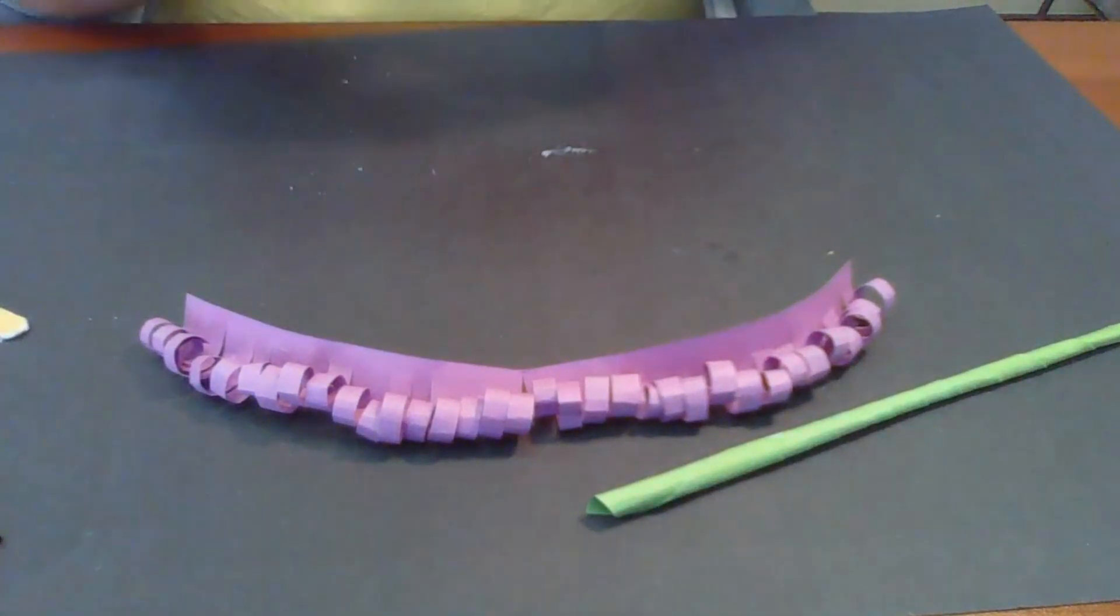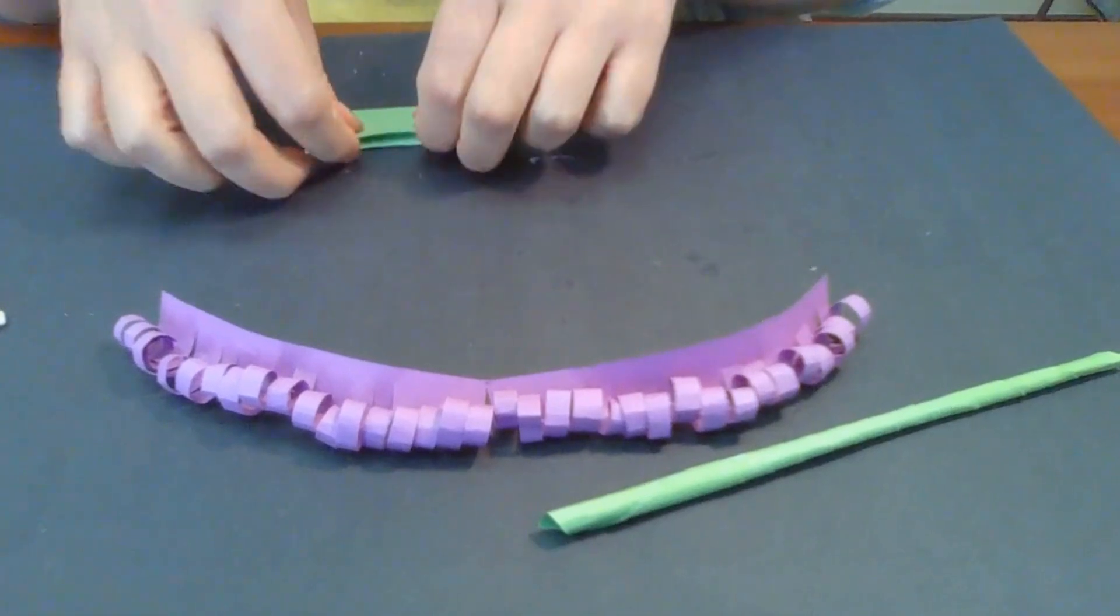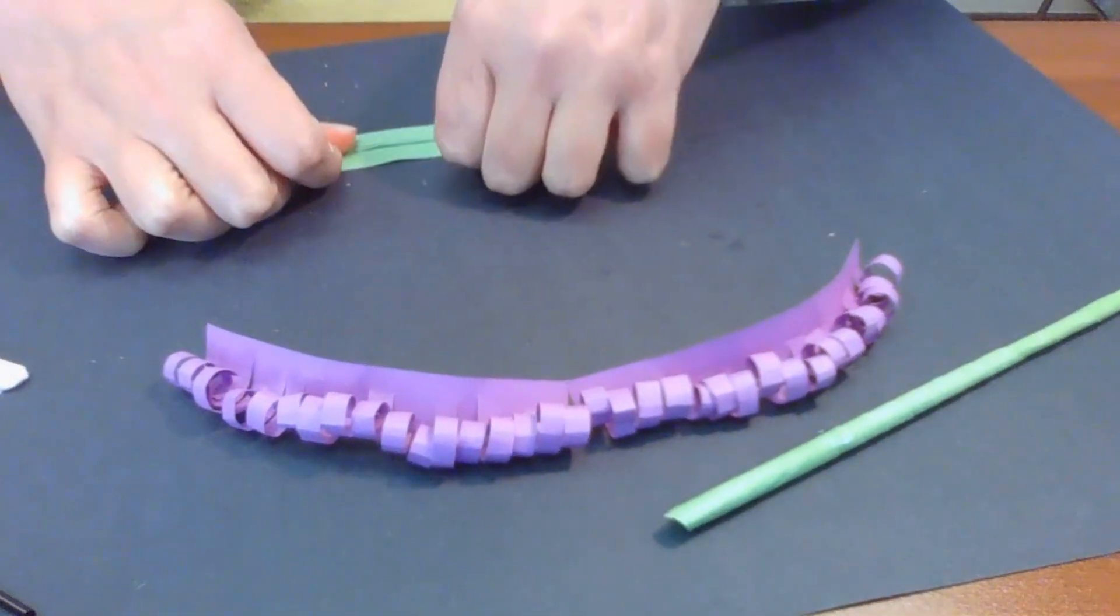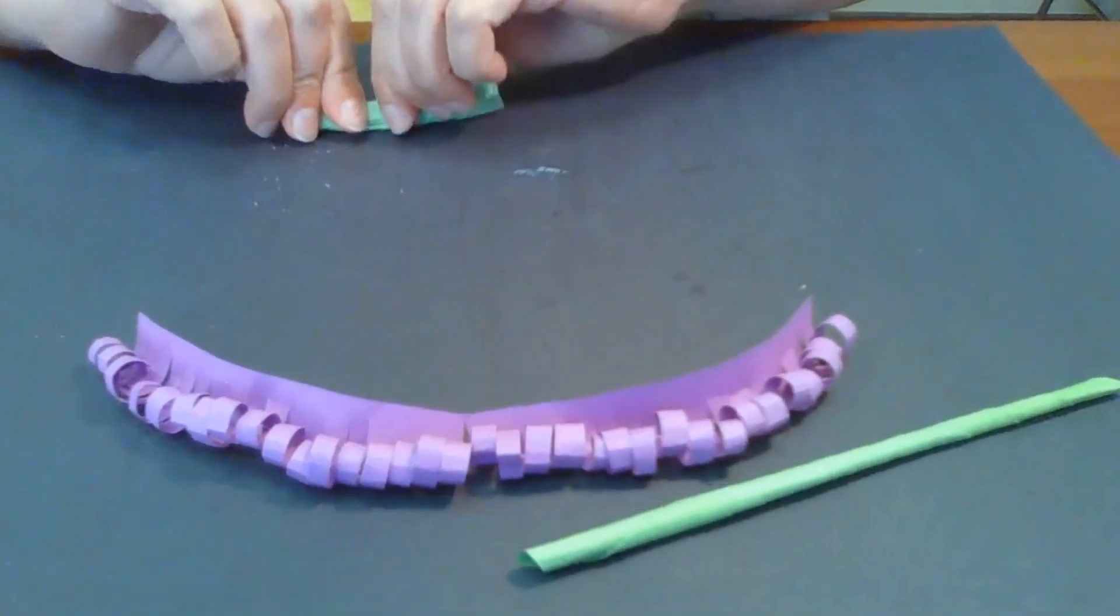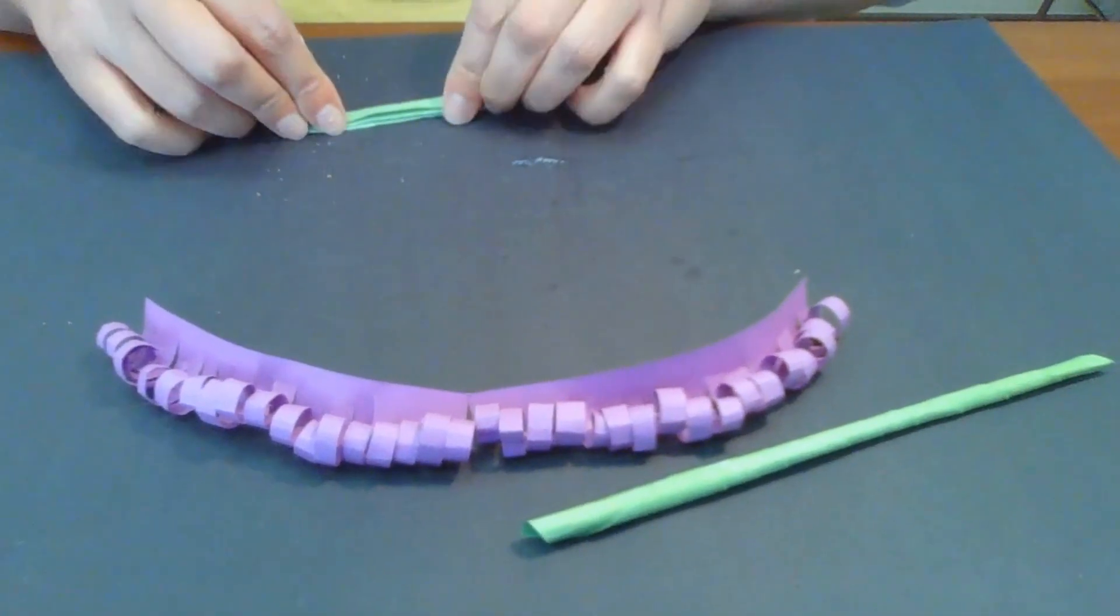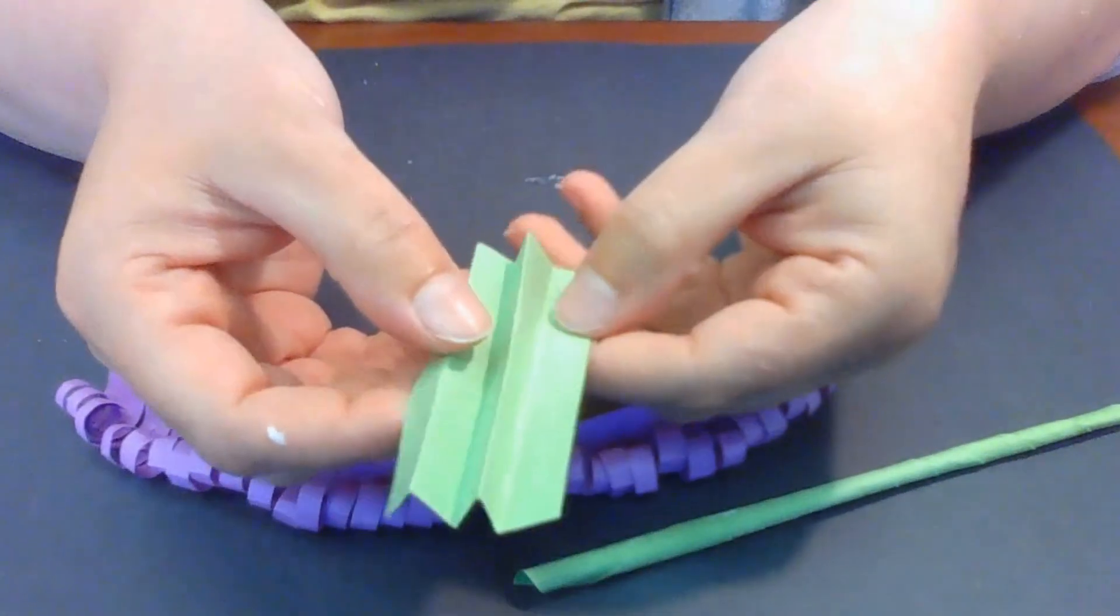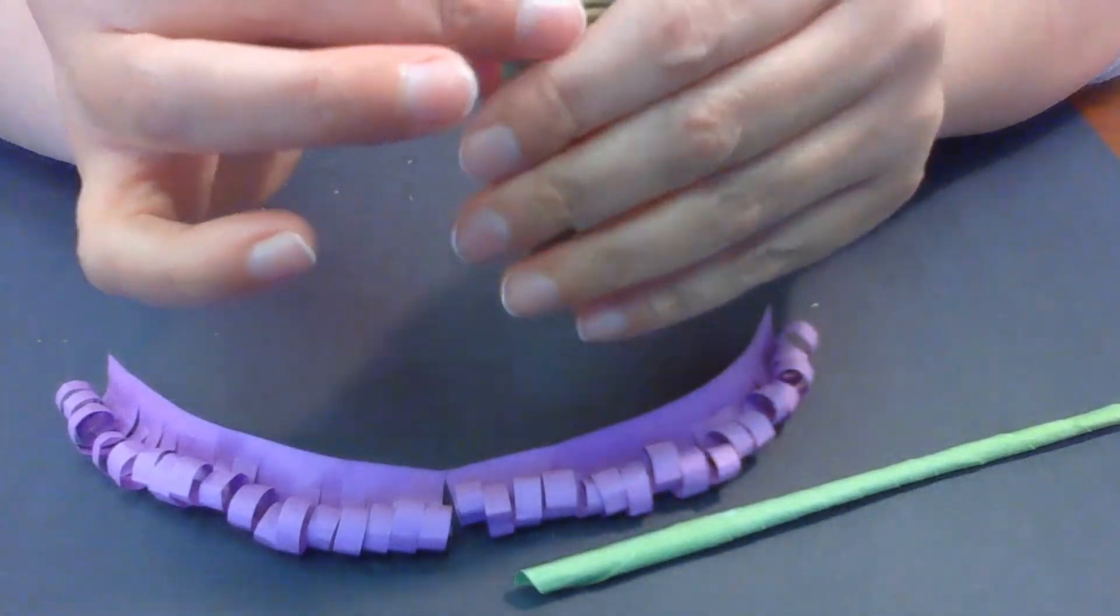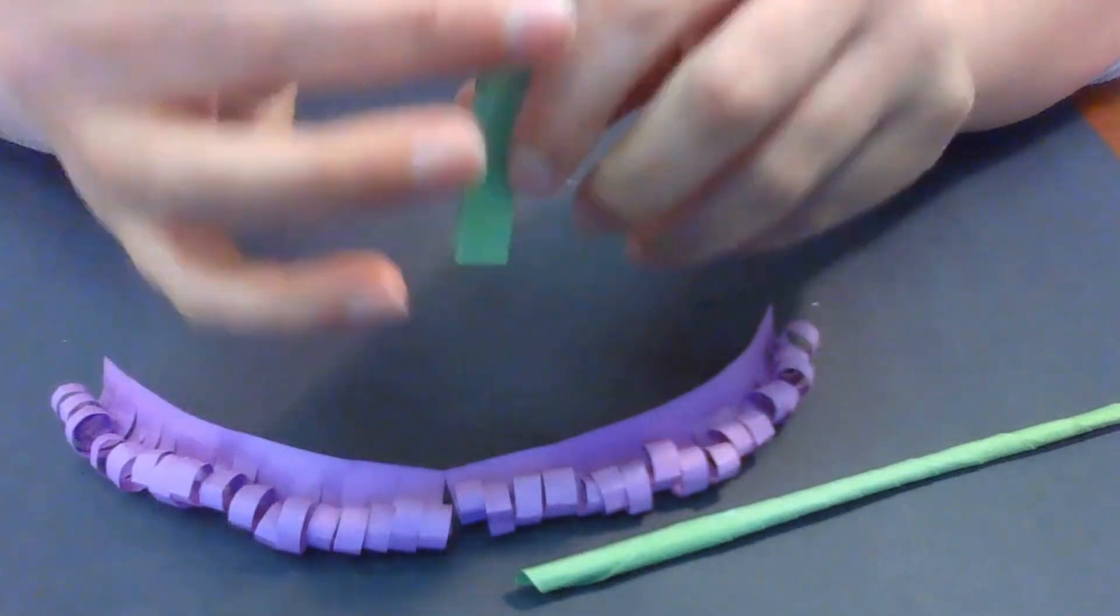Okay. Again, it doesn't have to be perfect. So I'm going to keep folding it accordion style. So back and forth as evenly as possible. But you know, sometimes some of our leaves are a little bit thicker than others. And that's quite all right. Okay. So I have it all folded. I got about four folds here.